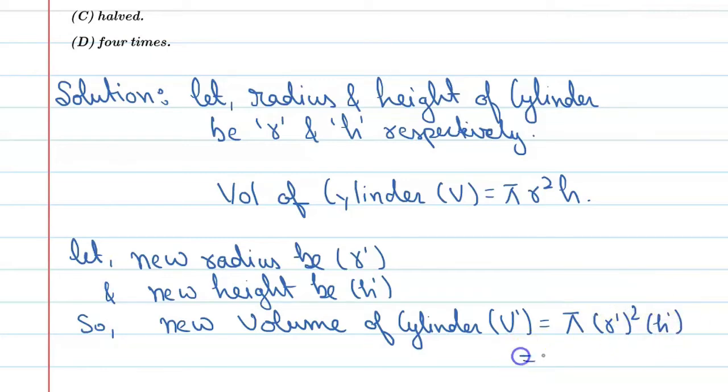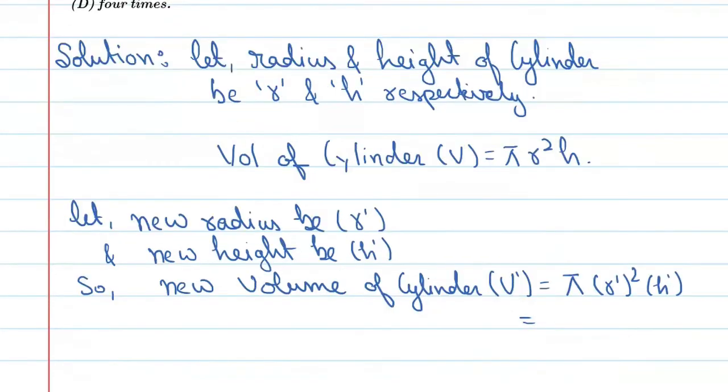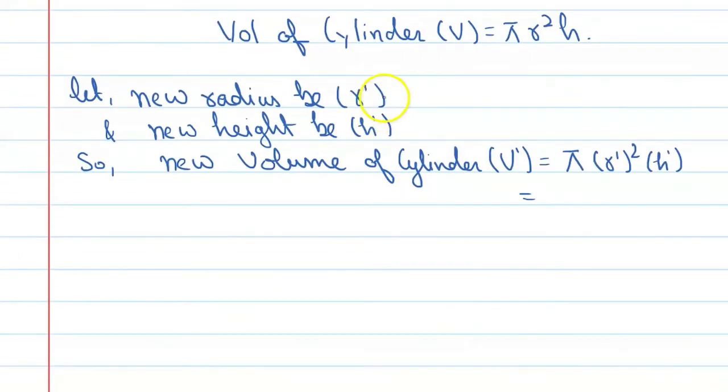Alright, so let's put their values here. Here, what is r prime? It is half of the previous radius. You can say this is r by 2. And what is h prime? h prime is double of previous height you can say. So now put this value here and see what we will get.